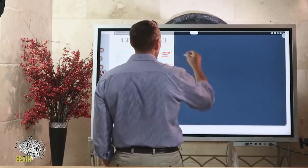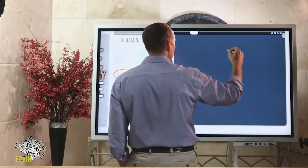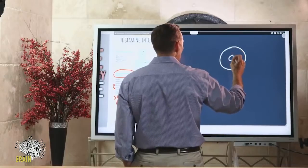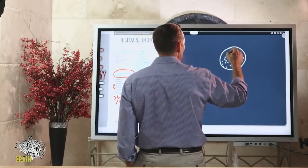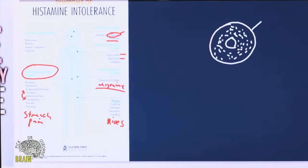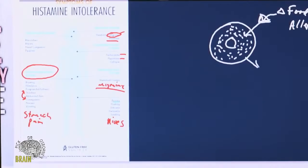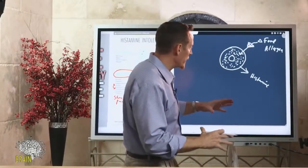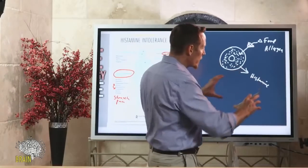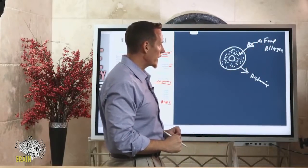You have specialized immune cells in the body called mast cells. Mast cells have histamine stored within them, and on their surface they have receptors — antennas for the immune system. When a food allergen binds to one of these receptors, it sends a message into the cell to degranulate and release histamine. Histamine's job is to open up blood vessels to the area and send chemical messages to the rest of the immune system so it can come fight and neutralize that allergen. This is actually a normal, natural response.